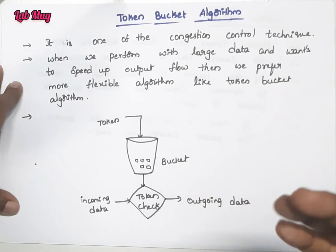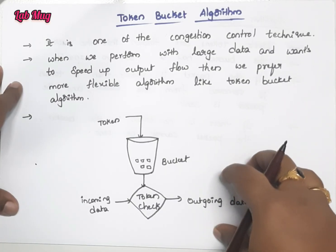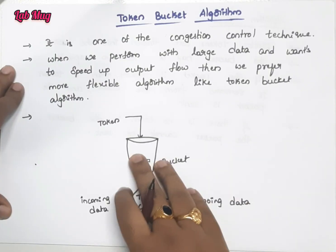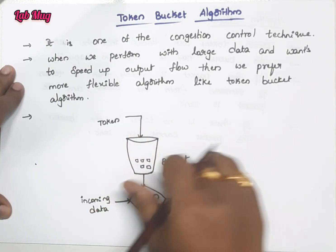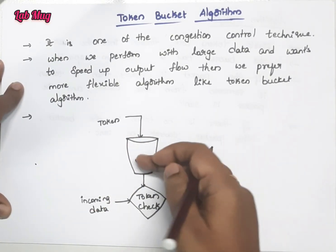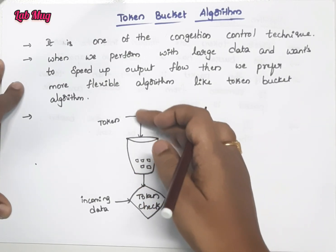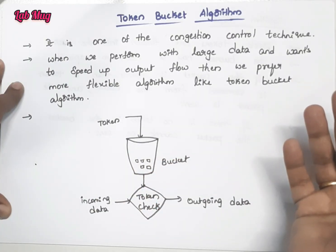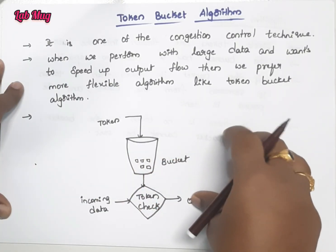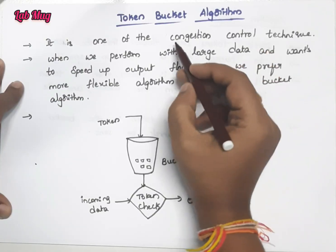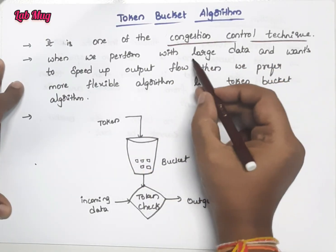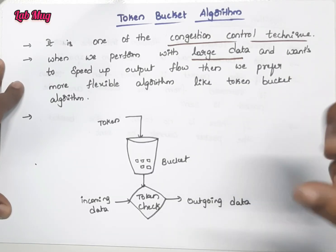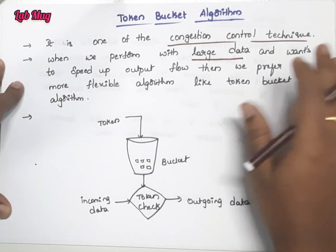However, the disadvantage of the Leaky Bucket Algorithm is that when we have a large amount of bulk data to access, if the bucket becomes full, overflow occurs and we face packet loss. In that situation, we use the Token Bucket Algorithm. It is also a congestion control technique, but it allows flexible access to large data without a fixed output flow.